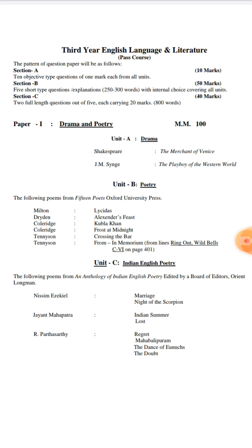In Unit C, Indian English poetry has been prescribed. There are two poems by Nissim Ezekiel: Marriage and Night of the Scorpion. Indian Summer and Lost are by Jayanta Mahapatra. Regret, Mahabalipuram, The Dance of the Eunuchs, and The Doubt are four other poems also prescribed in the syllabus.